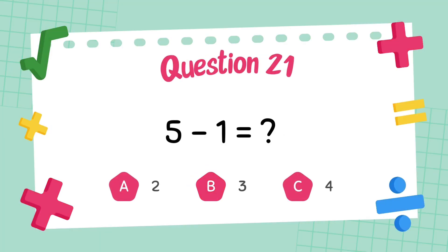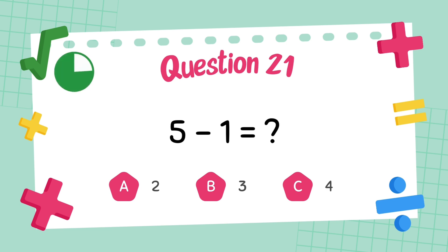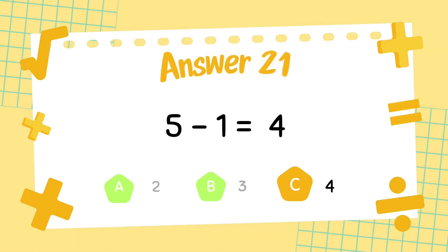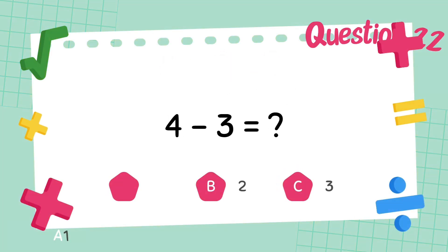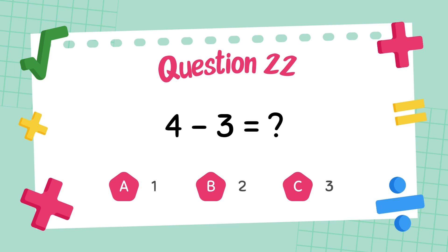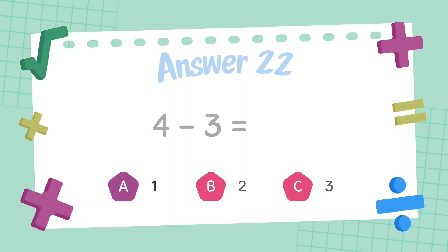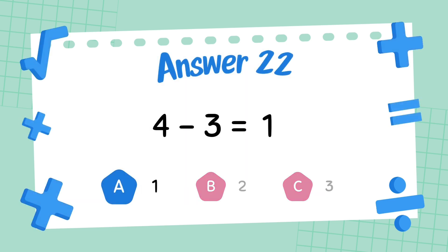What is 5 minus 1? The answer is 4. What is 4 minus 3? The answer is 1.